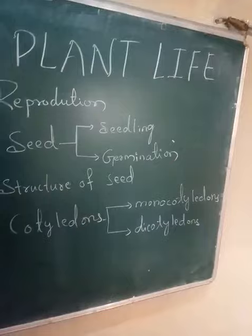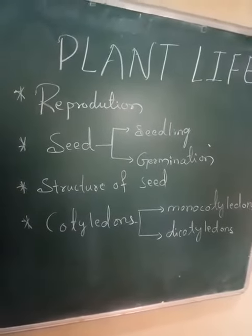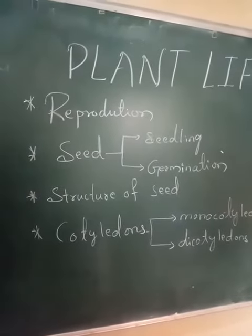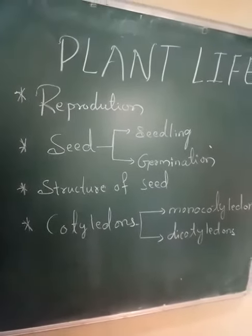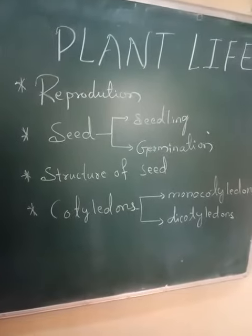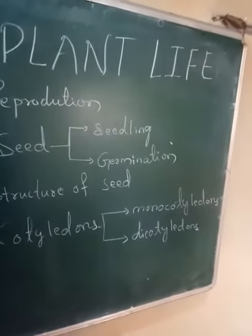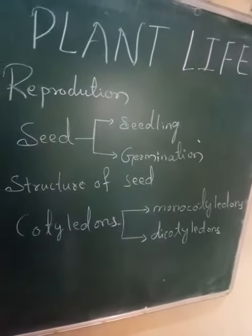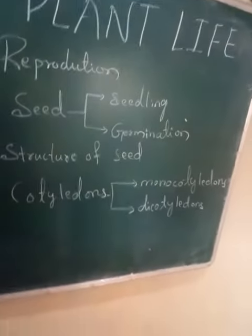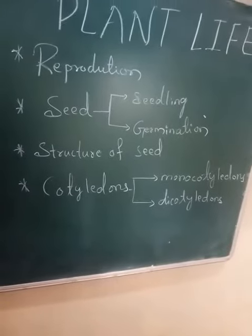In plant life, reproduction takes place with the help of a seed. Using the seed involves two processes: one is seedling and another one is germination of the seed.